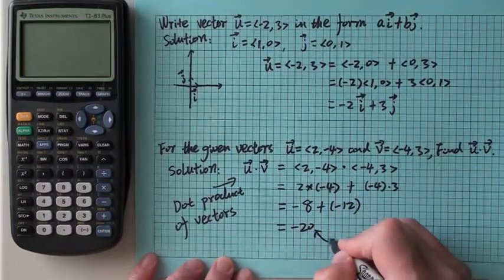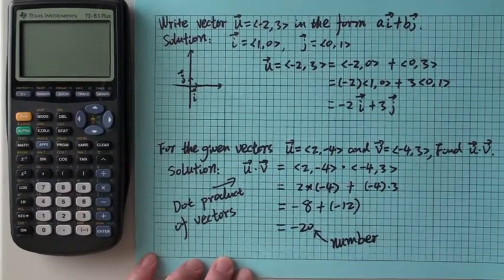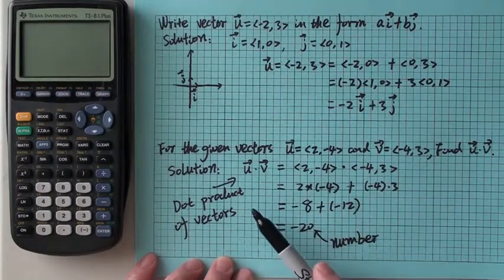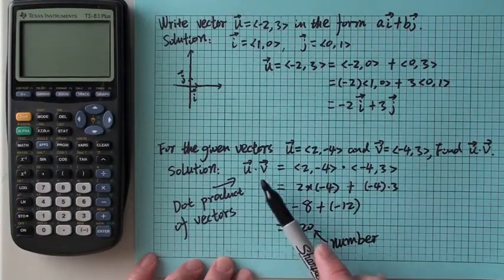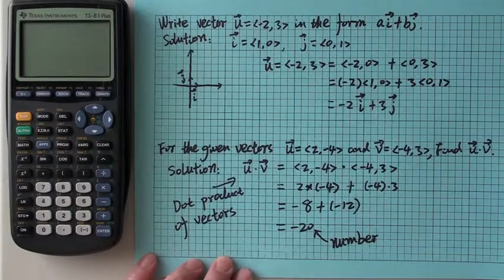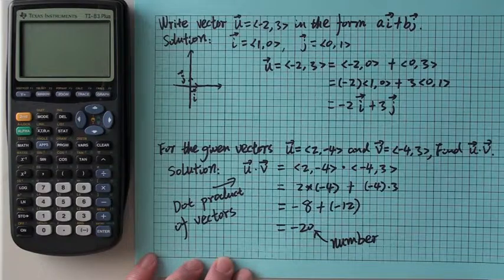This is a number. So for the dot product, you won't get a vector. The product of vectors is not a vector, it's a number. I'll see you next time.